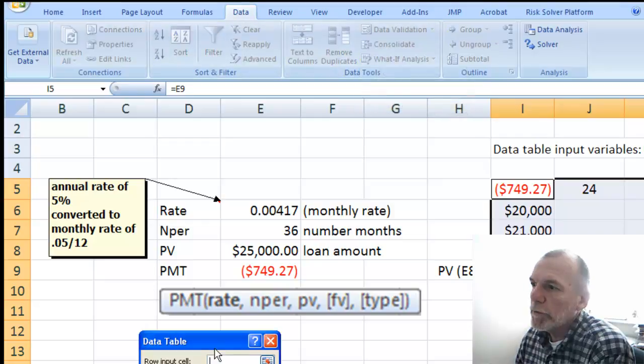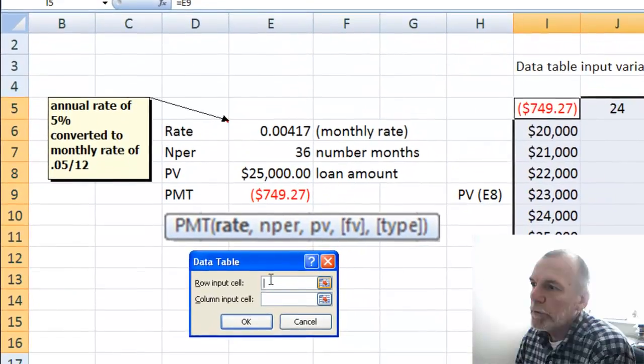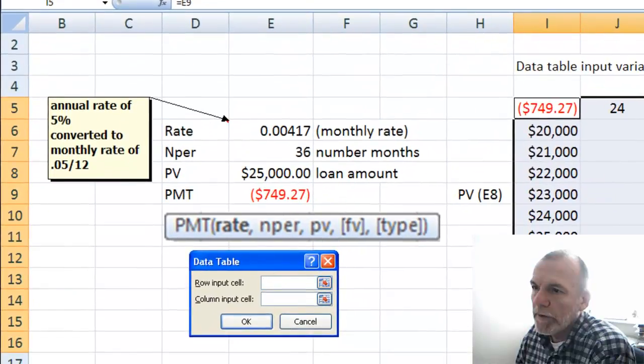The row input, our row is number of months, that's found in the model in cell E7, so we select E7. Our column input is present value, that's found in our model in cell E8. Then say OK.